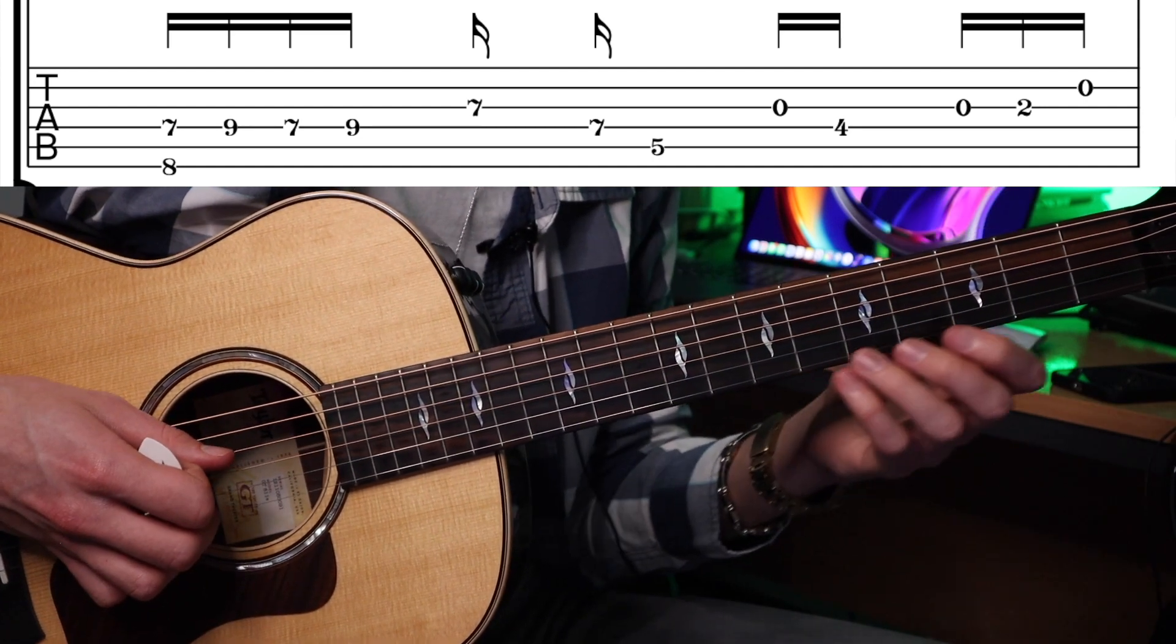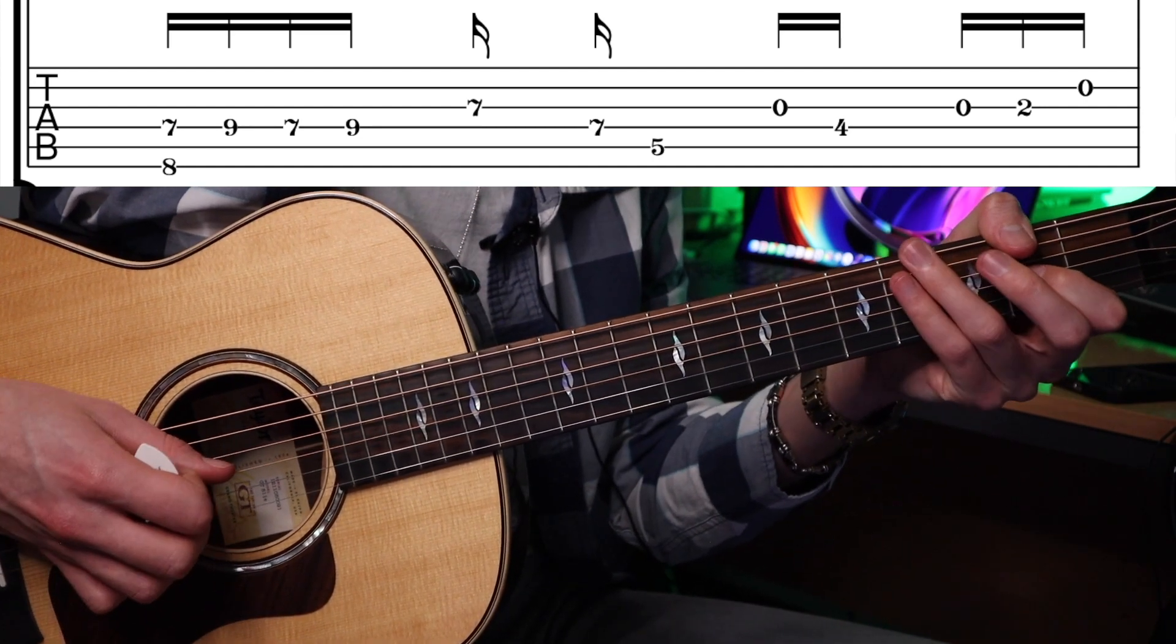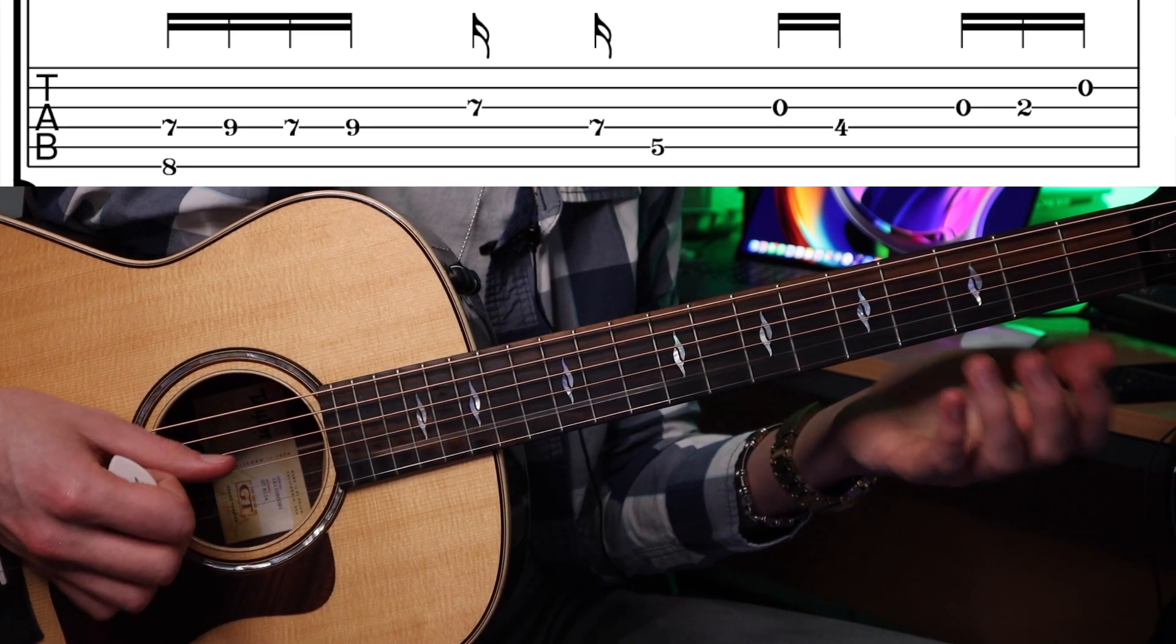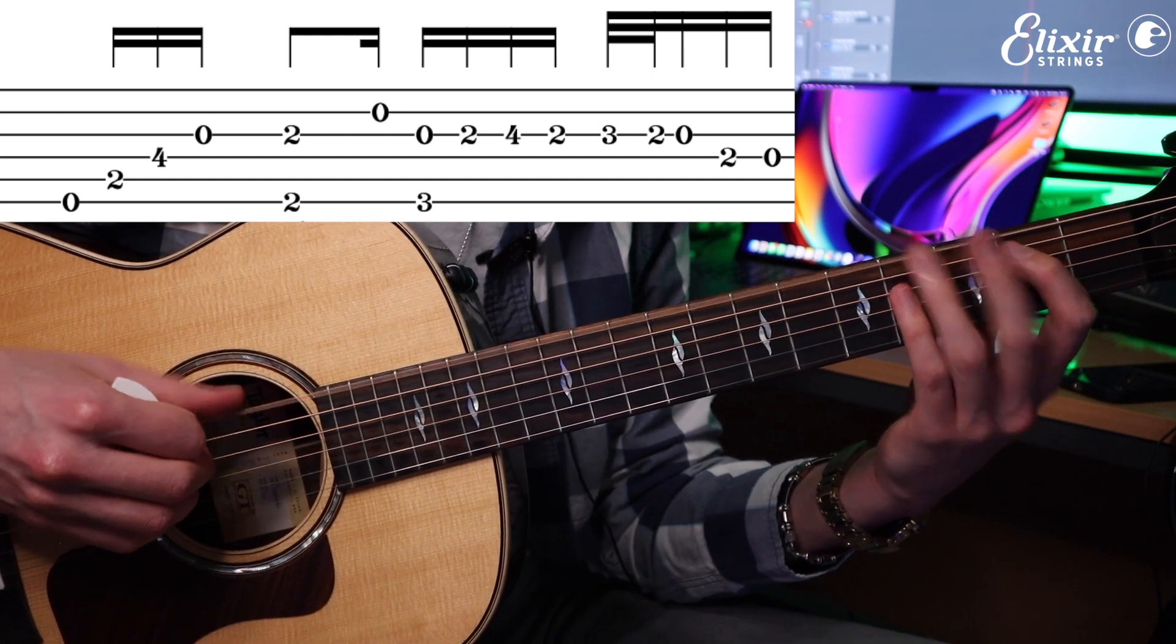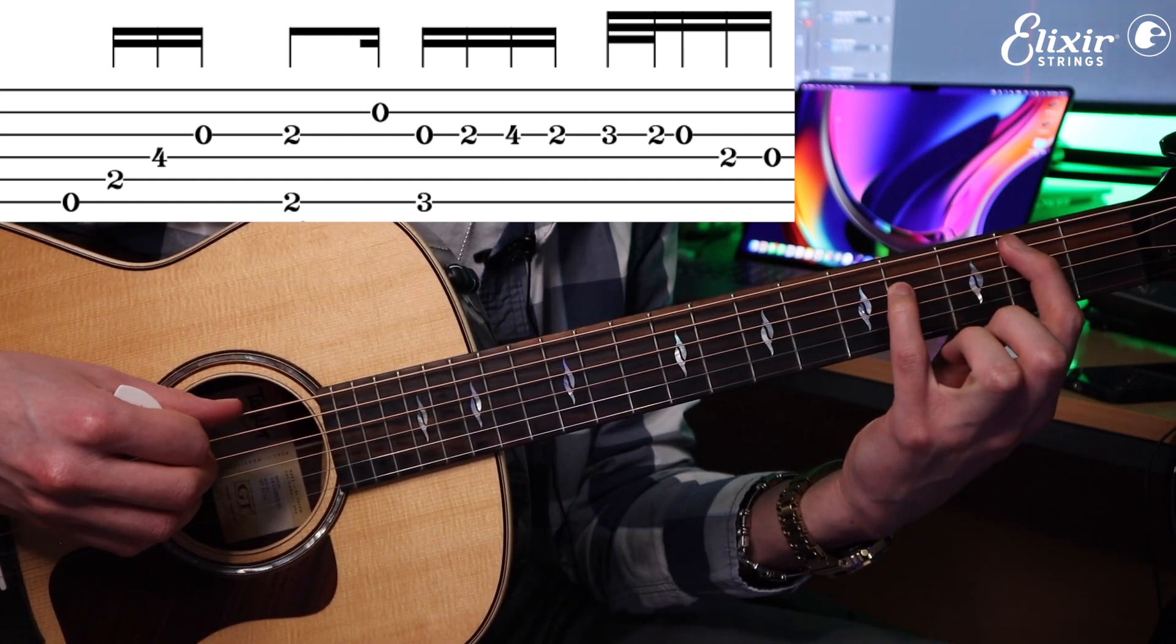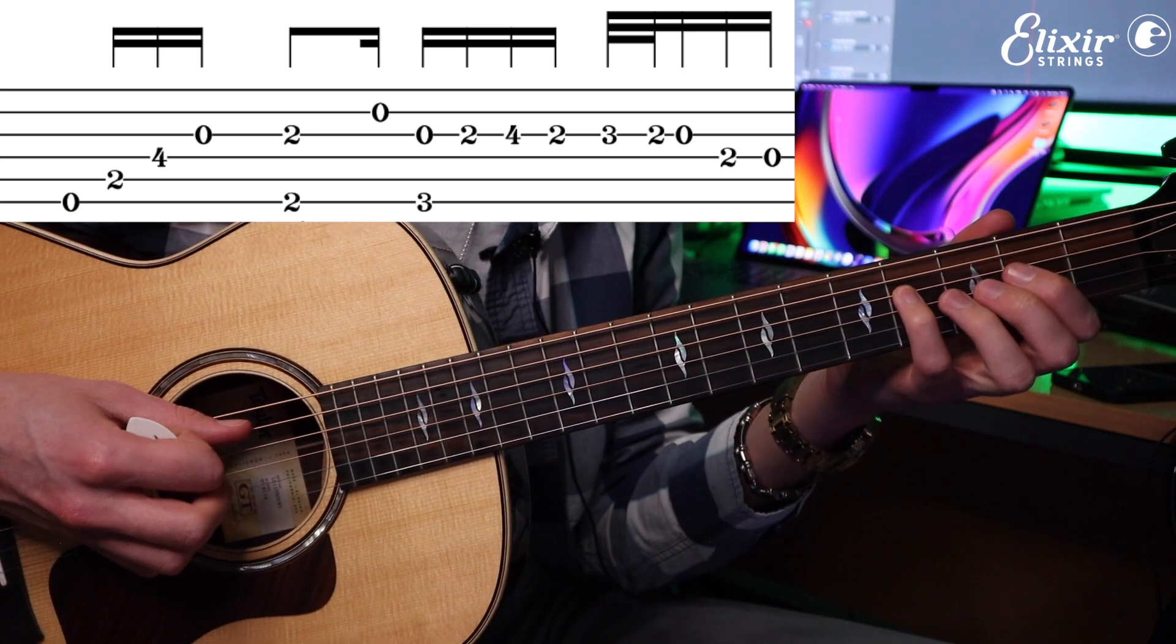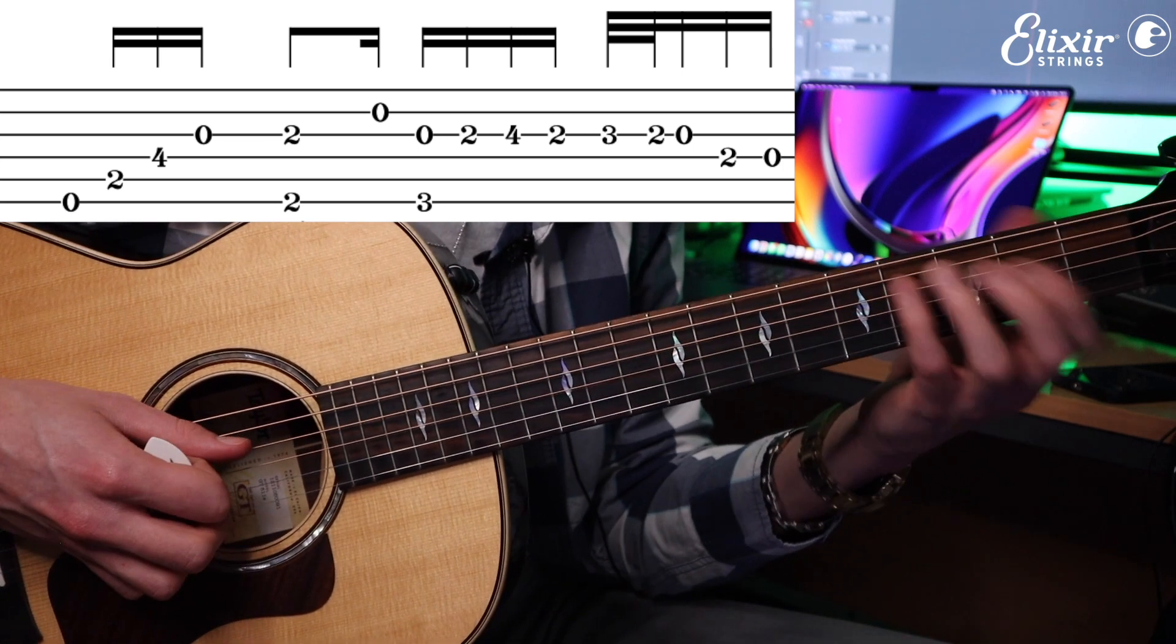Then after that we have an open G hammered onto two, then an open B, G. Then we're going to have open E string played with our thumb, second fret of the A string, fourth fret of the D string, then open G.